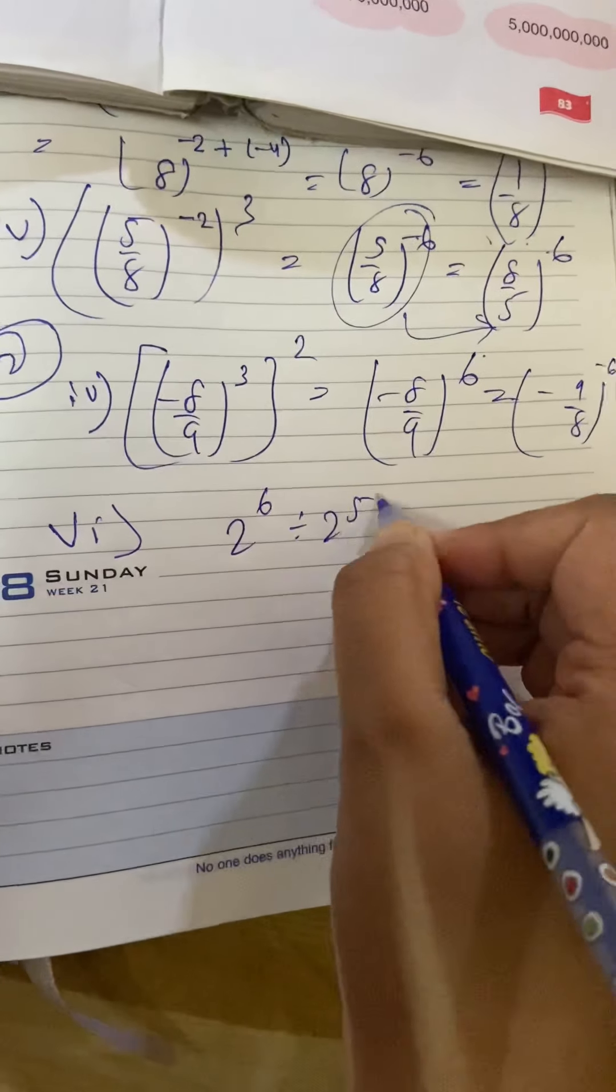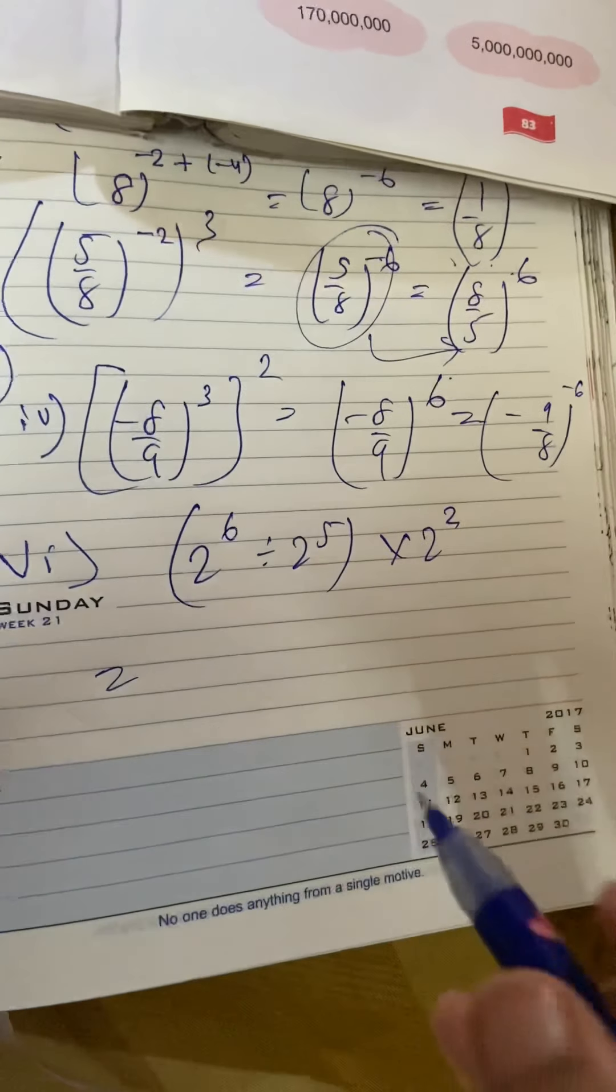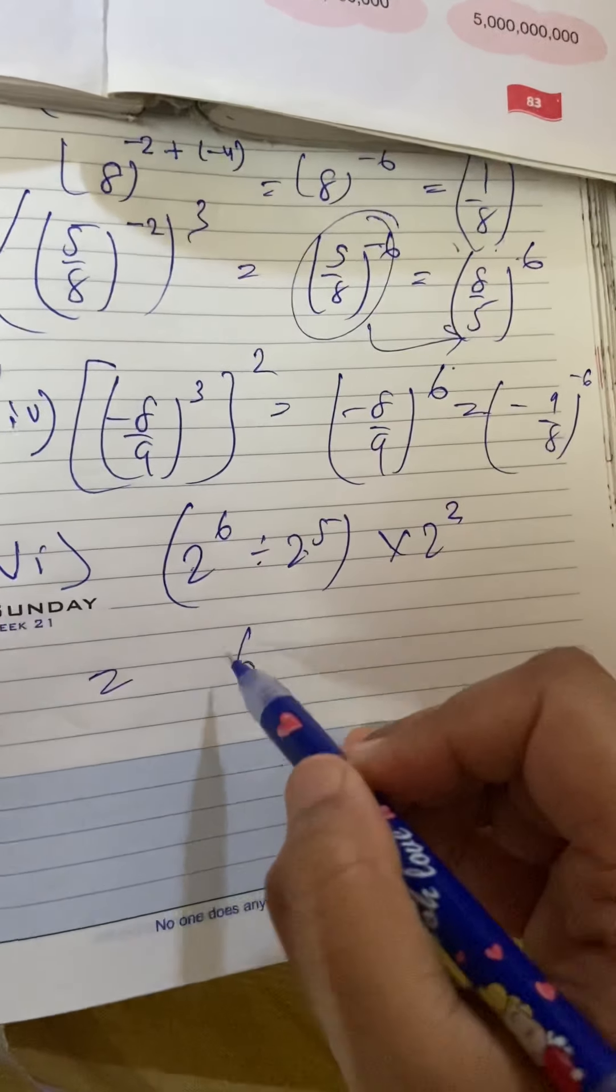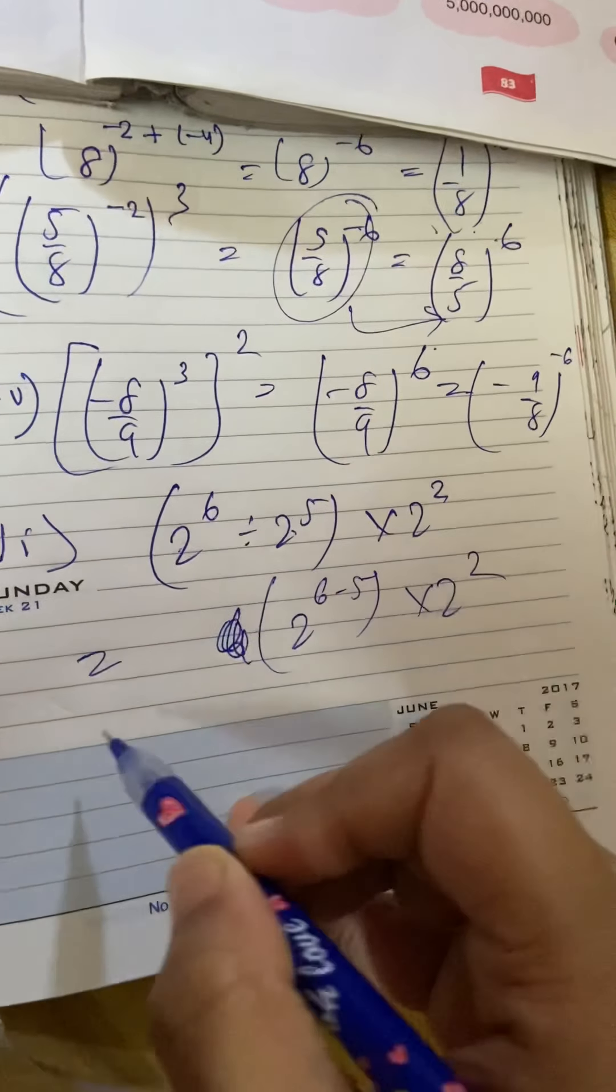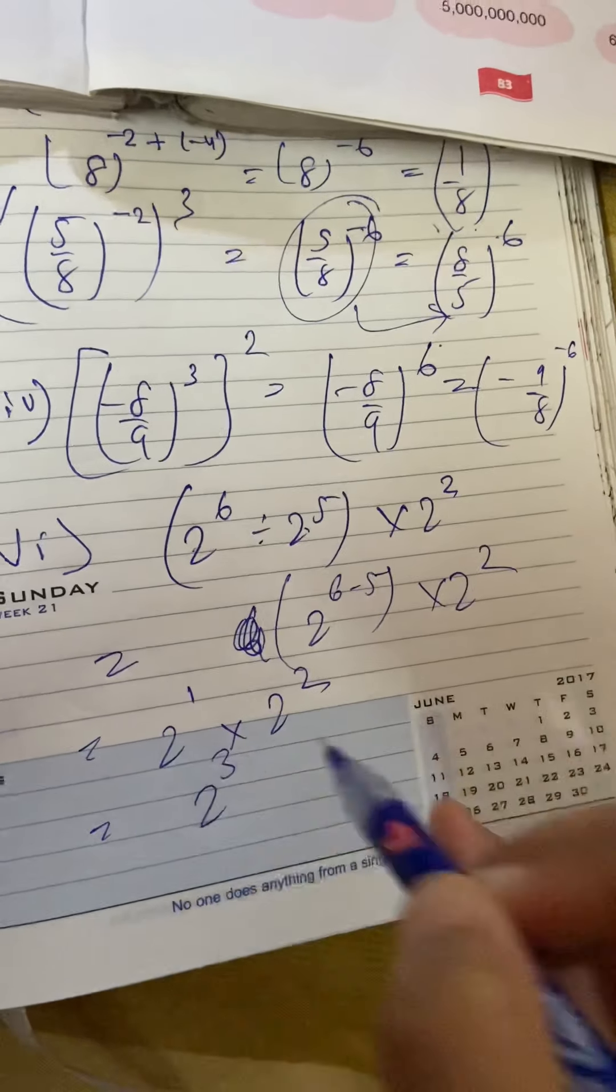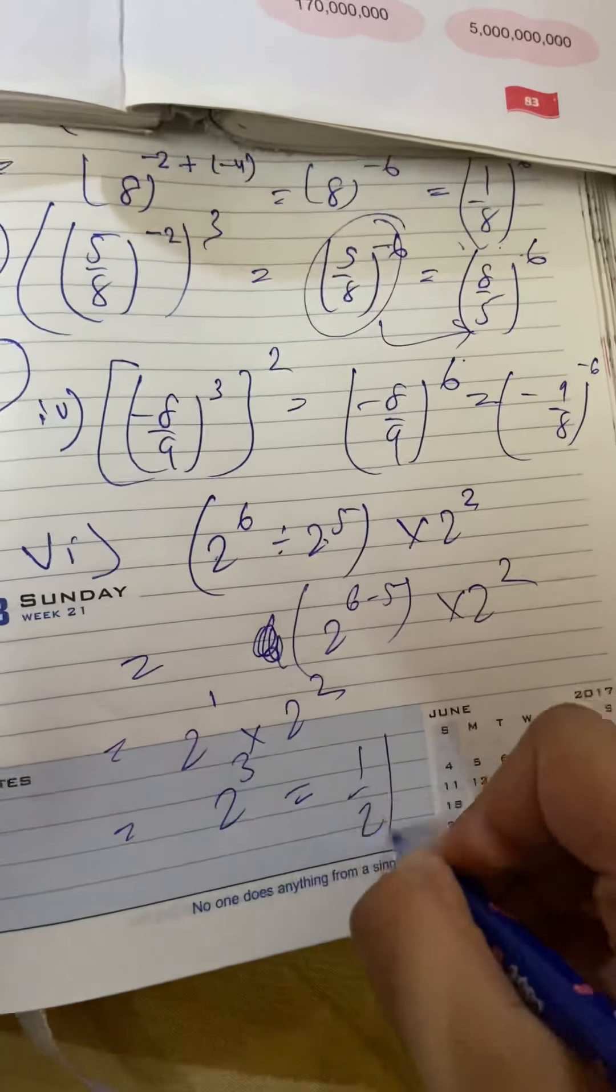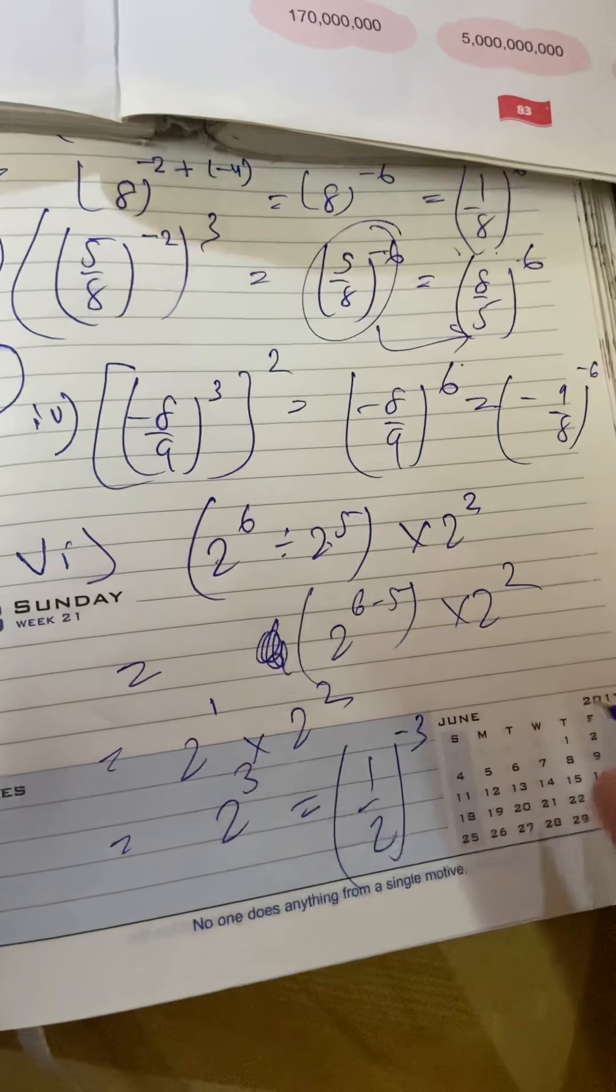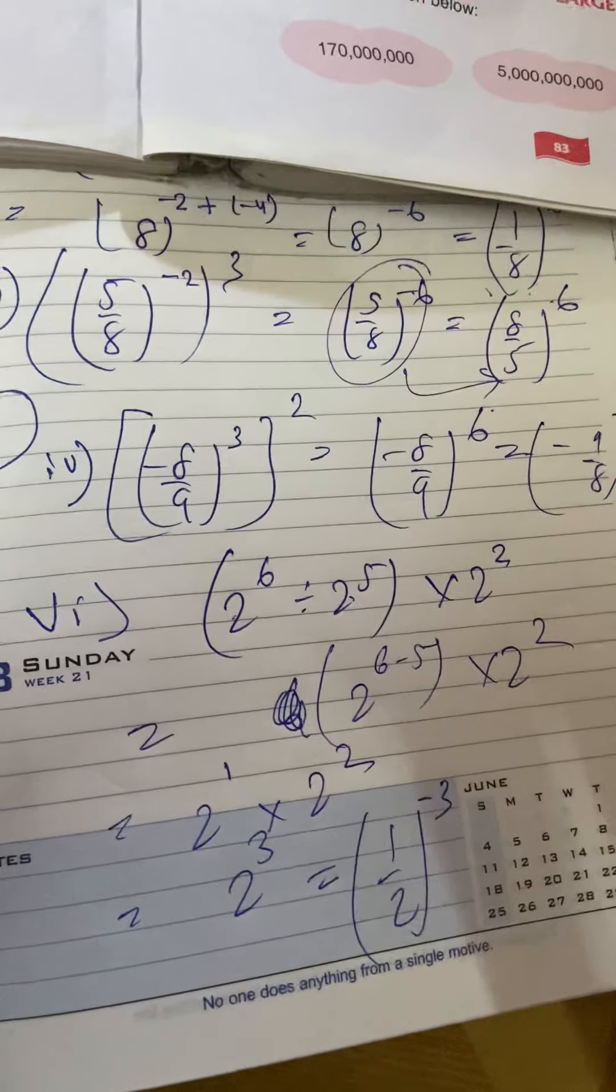Isi tarah se ek or question. 2 to the power 6 divided by 2 to the power 5 into 2 square. To, yaha to base same hai. To, powers subtract ho jayega. To, this will be 2 to the power 1 into 2 to the power 2. Add hoogar 2 ka cube ho gaya. Ab, yis me negative exponent lana hai. To, 1 by 2 kar dengi. To, complete worksheet 5 with the help of this video.